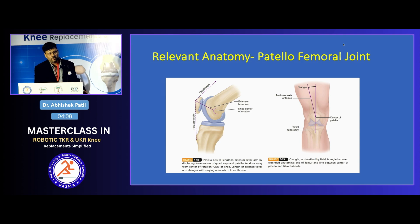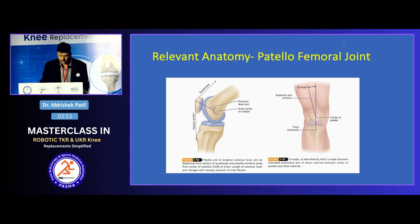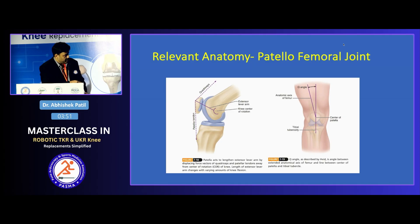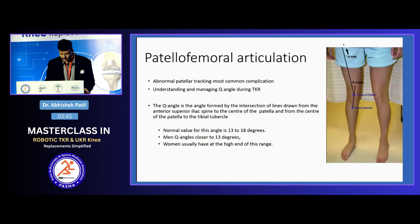The patellofemoral joint is one of the least understood and most complicated aspects of the knee. The important parameter is the Q-angle. The Q-angle at the end of a total knee replacement depends on femoral and tibial rotation. Getting the Q-angle as close as possible to normal is important because that determines patellofemoral kinematics. The normal Q-angle is around 13 degrees.